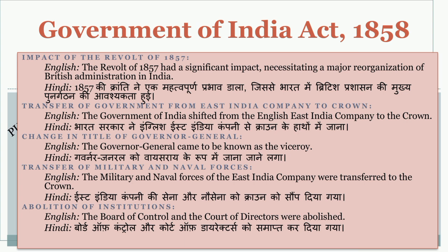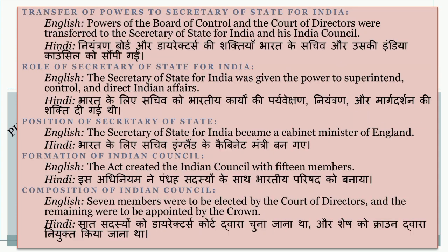The Governor General came to be known as the Viceroy. Governor General ko Viceroy ke roop mein jana jane laga. The military and naval forces of the East India Company would transfer to the crown. East India Company ki sena aur nausena ko crown ko saunt diya gaya. The Board of Control and the Court of Directors were abolished. Board of Control aur Court of Directors ko samapt kar diya gaya. Powers of the Board of Control and the Court of Directors would transfer to the Secretary of State for India and his India Council.